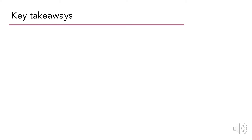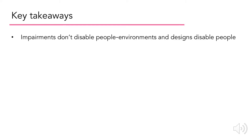Let's talk about some of the key takeaways from Craig's video. First, impairments don't disable people — environments and designs disable people. For example, a person in a wheelchair is not disabled until there is a sidewalk that doesn't have a ramp. Secondly, impairments can be temporary, meaning users may not necessarily have a long time to adjust to their impairment. This means that accessibility features of a site have to be easy to find and readily available.